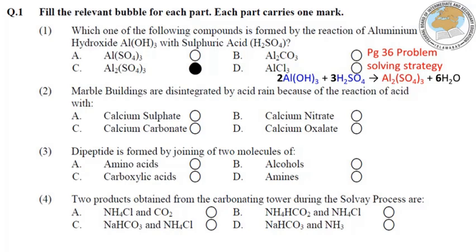Part 2: Marble buildings are disintegrated by acid rain because of the reaction of acid with — یہ page number 118 کی اوپر second equation from the top ہے۔ Calcium carbonate چونکہ buildings میں چونا وغیرہ بھی ہوتا ہے تو وہ acid rain سے بڑا effect ہوتا ہے۔